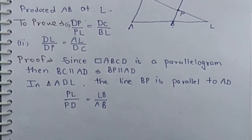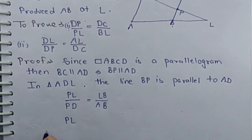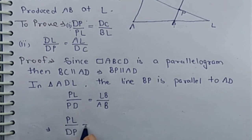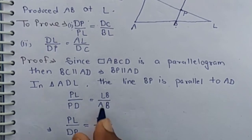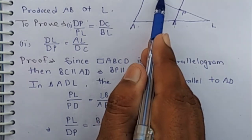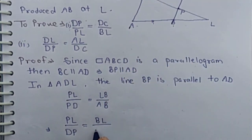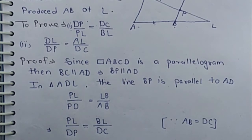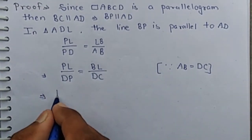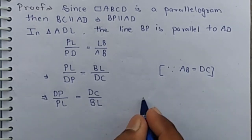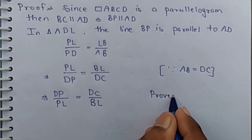We can write PL as it is, and PD can be written as DP, and LB as BL. Since AB is equal to DC — because opposite sides of a parallelogram are equal — we can write DC in place of AB. Taking reciprocals, we get DP by PL equal DC by BL. First part is proved.